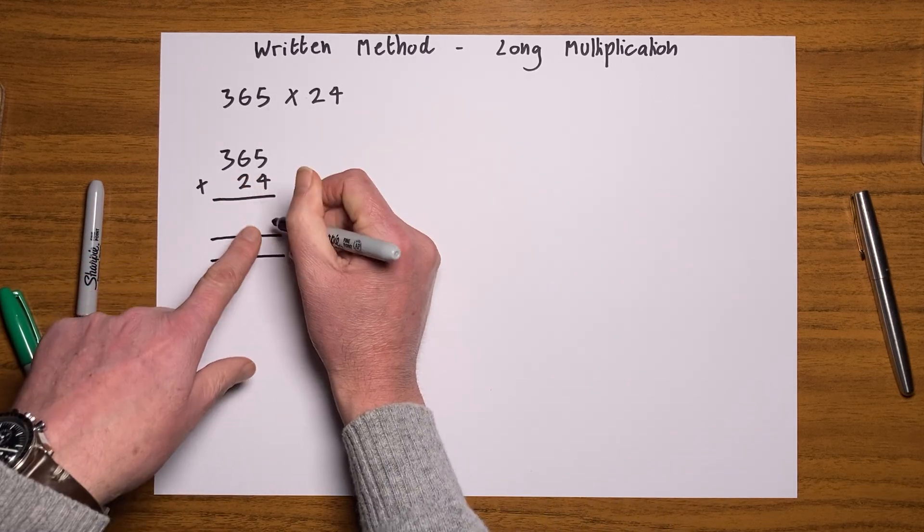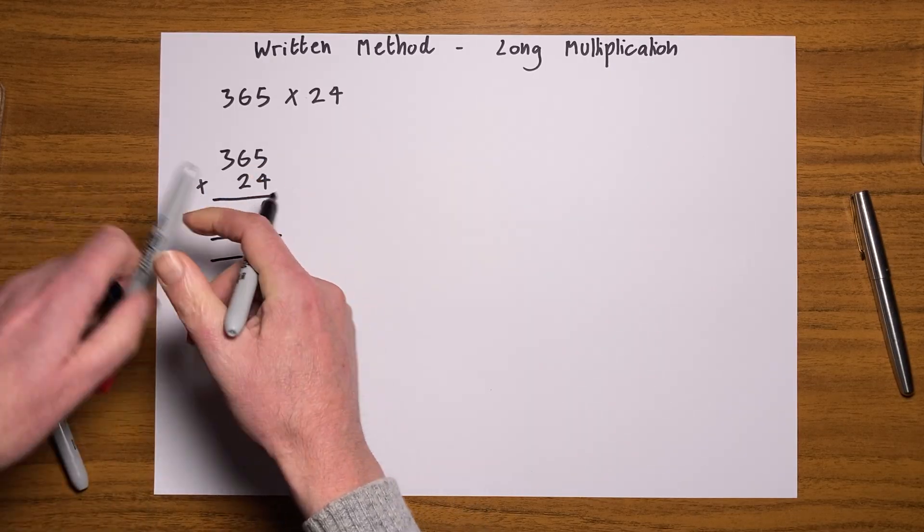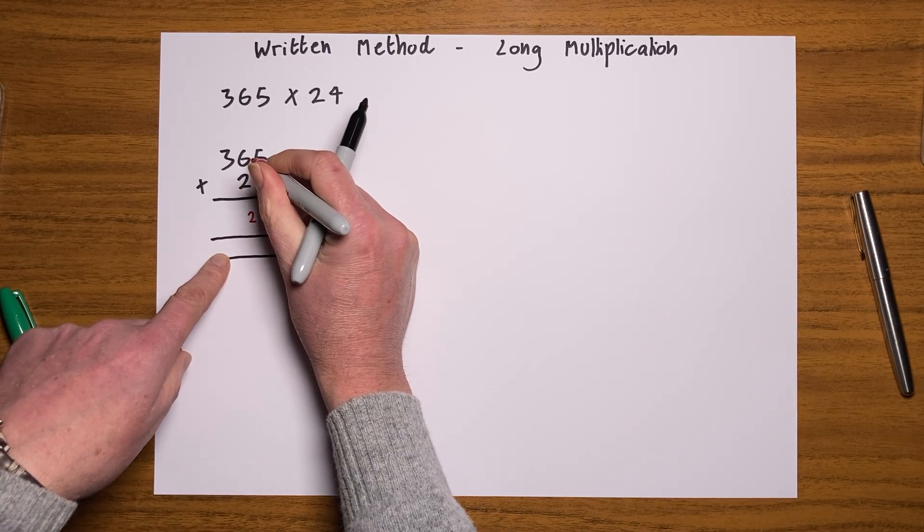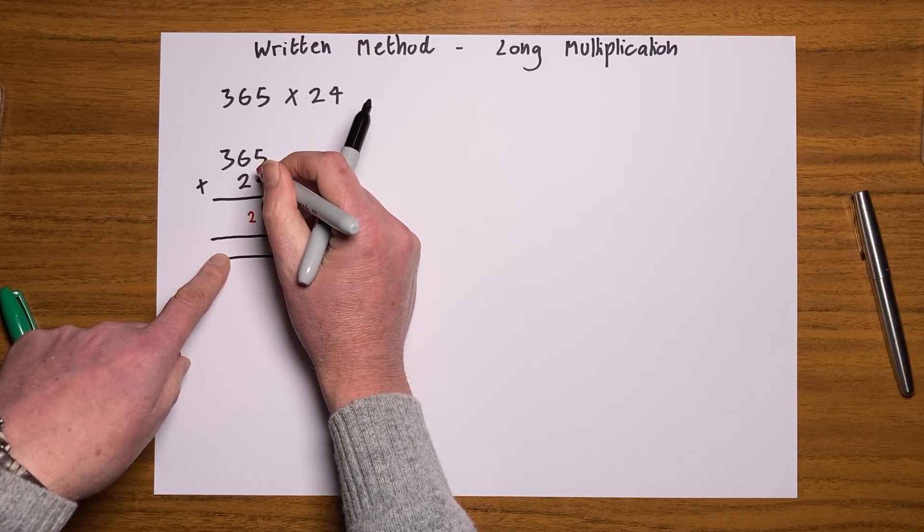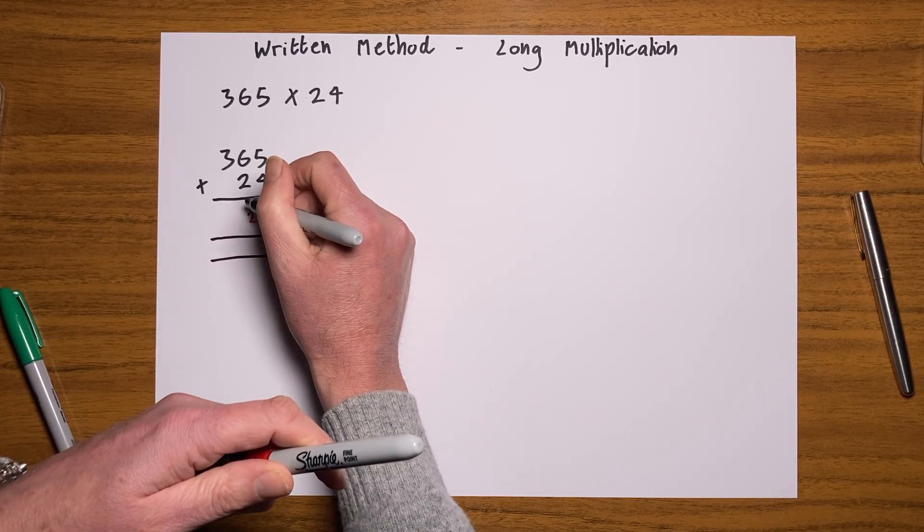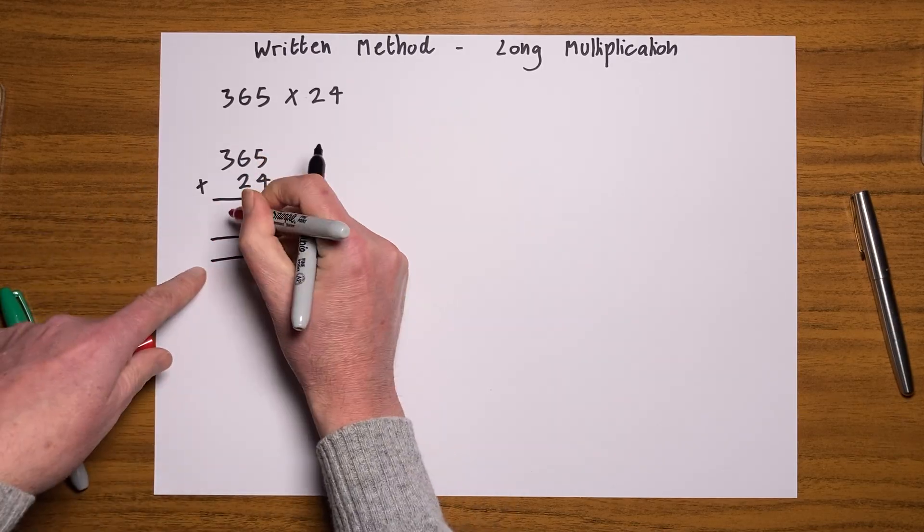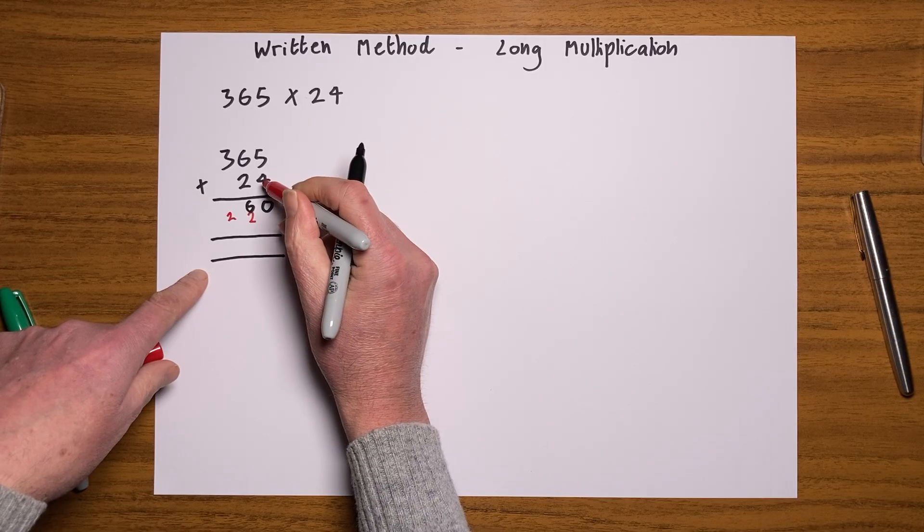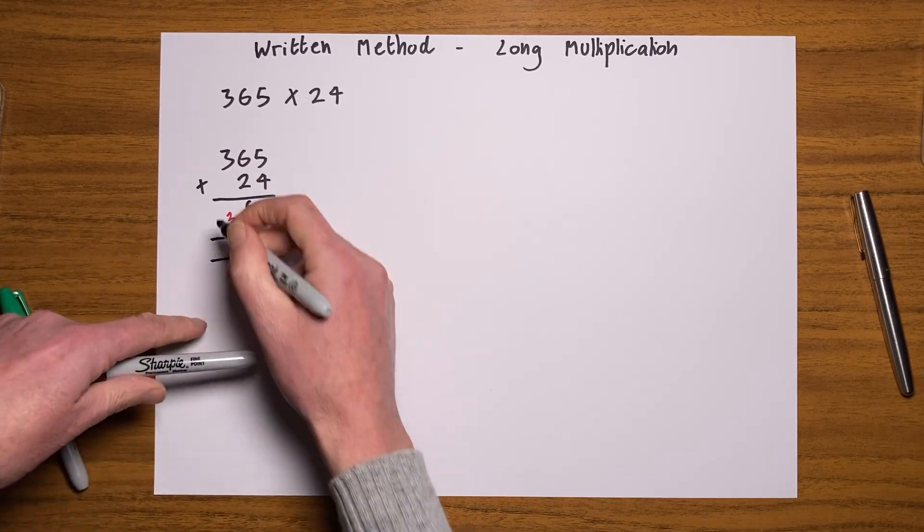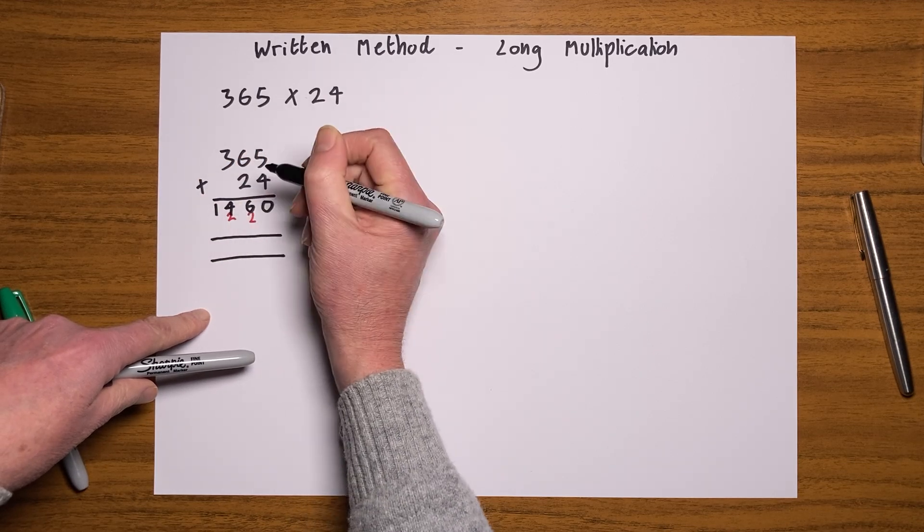The first bit is exactly the same as short multiplication. I'm going to do 365 times 4. Four fives is 20, and let's carry the two over here, or the 20. Four sixties is 240, add that 20 is 260, so I'll put the 60 in here, I'll carry that 200 over up.